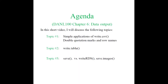This is DANL 100 chapter 6 data output. In this short video I'll discuss the following topics: topic number one, simple application of write.csv — this function is the opposite of read.csv. Then I'll discuss how to remove double quotation marks and lower names. Topic number two, write.table — which is opposite of read.table. Topic number three, save versus write.rds. The last one is save.image.